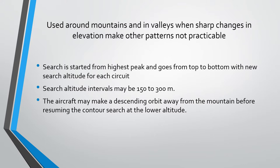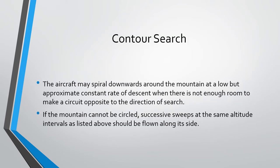Search altitude intervals may be 150 to 300 meters. The aircraft may make a descending orbit away from the mountain before resuming the contour search at the lower altitude. In the contour search, the aircraft may spiral downwards around the mountain at a low but approximately constant rate of descent when there is not enough room to make a circuit opposite to the direction of search.